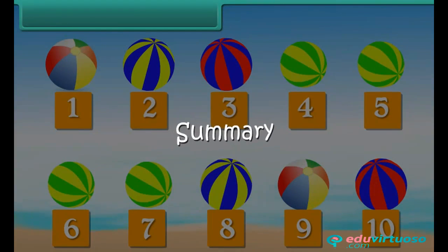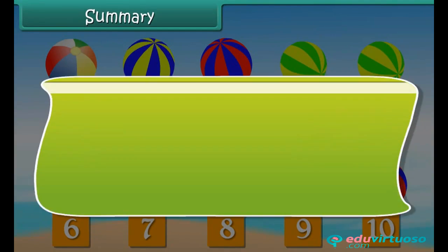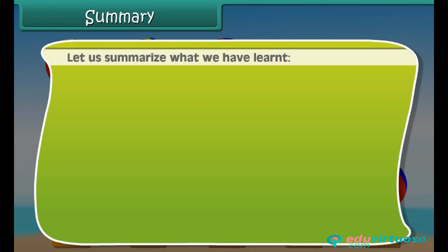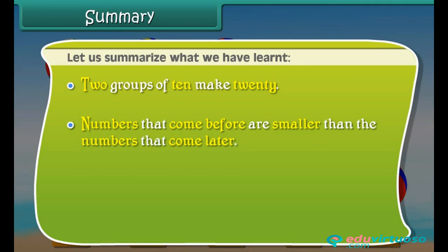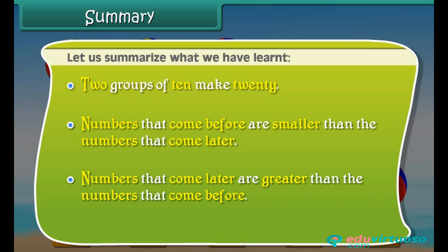Let us summarize what we have learnt: two groups of 10 make 20; numbers that come before are smaller than the numbers that come later; and numbers that come later are greater than the numbers that come before.